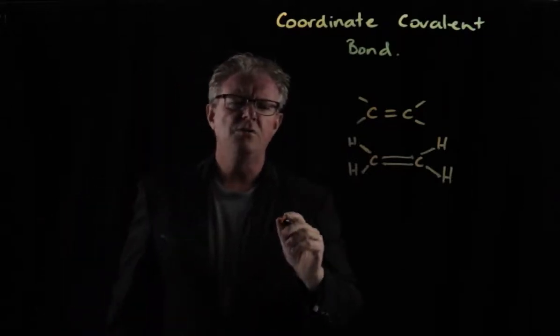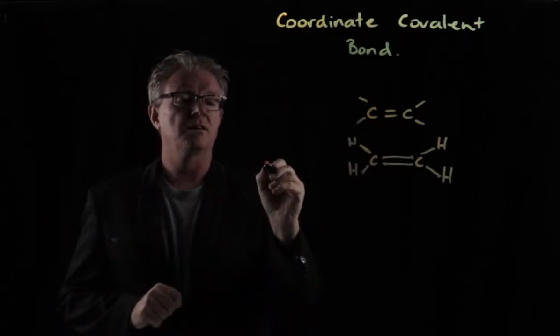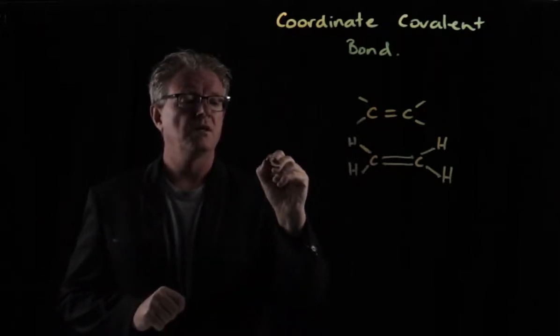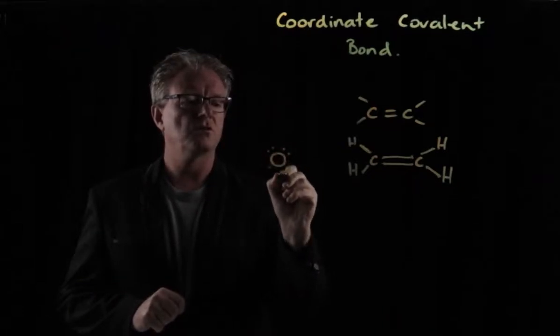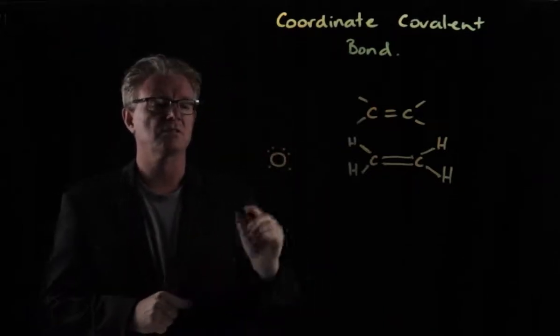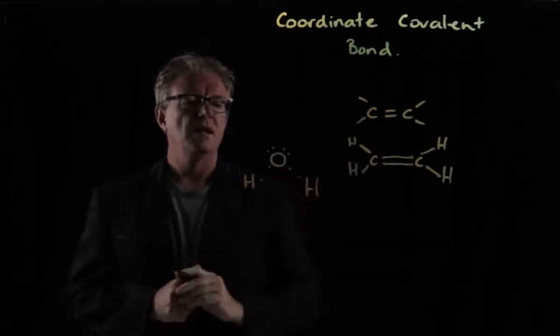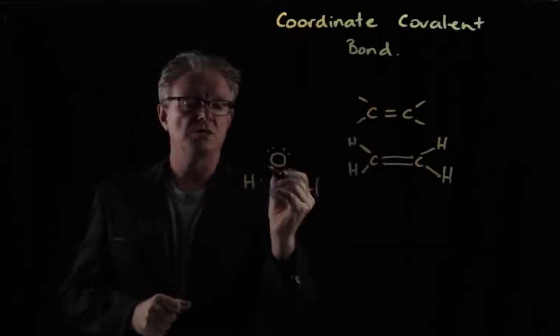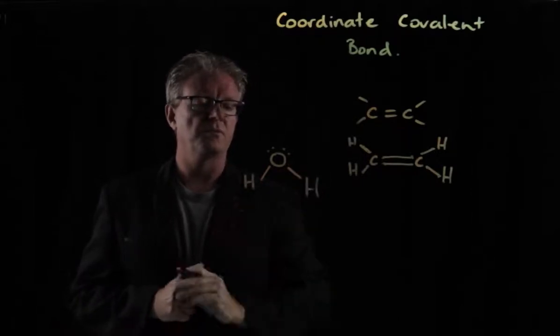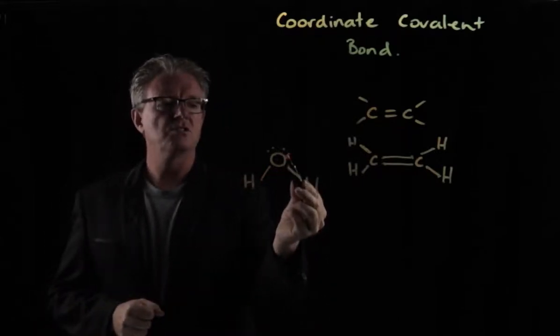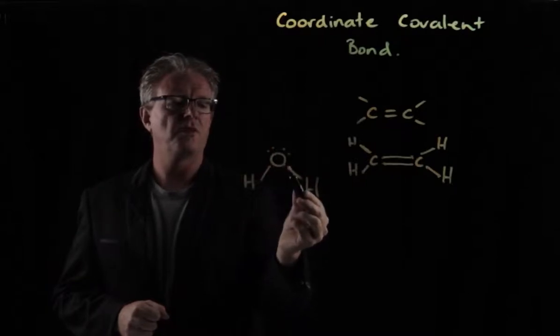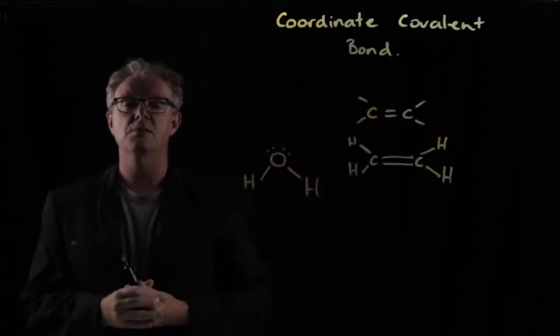However, if we were to look at another structure, let's say a good old water, then we have water here. It has six valence electrons. Then we have our hydrogen, and of course, those two will share. So that's one covalent bond. There's another covalent bond. So at the moment, this oxygen here's got one, two, three, four, five, six, seven, eight. It's nice and stable.